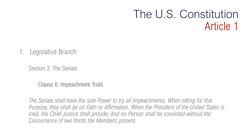Section 3, Clause 6 is regarding impeachment trials. It says the Senate shall have the sole power to try all impeachments. When sitting for that purpose they shall be on oath or affirmation. When the president of the United States is tried, the chief justice shall preside, and no person shall be convicted without the concurrence of two thirds of the members present. To rephrase that: the Senate conducts trials of officials that the House impeaches. The Senate sits as a jury with the vice president presiding if the president is not on trial.